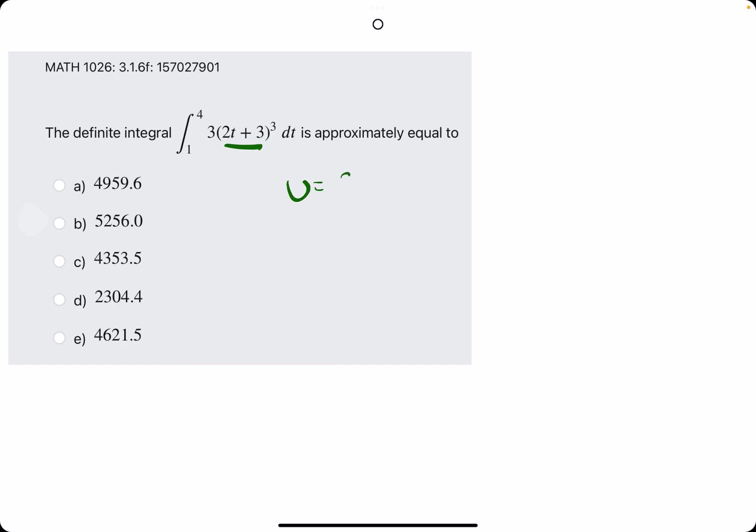So, let's identify our U. Our U is on the inside of parentheses, being acted on by the cubed. We find DU, the derivative of 2T + 3, is just 2, because 3 goes to 0. 2T goes to 2. Tack on DT. Solve for DT by dividing by 2.